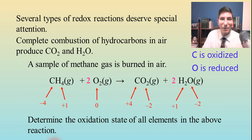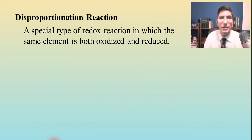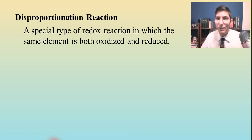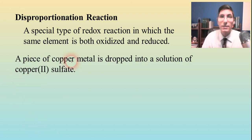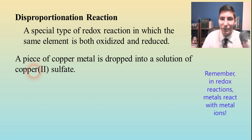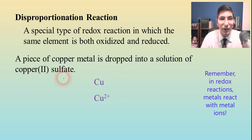Now let's look at a more advanced type of redox reaction called a disproportionation reaction. A disproportionation reaction is a special type of redox reaction in which the same element is being oxidized and reduced at the same time. For example, let's say we have a piece of copper metal dropped into a solution of copper sulfate. Whenever there's a metal involved in a redox reaction, normally it's the metal reacting with the metal ion. So the reactants are copper metal and copper(II) ions. The sulfate is acting as a spectator ion, so we can ignore it.